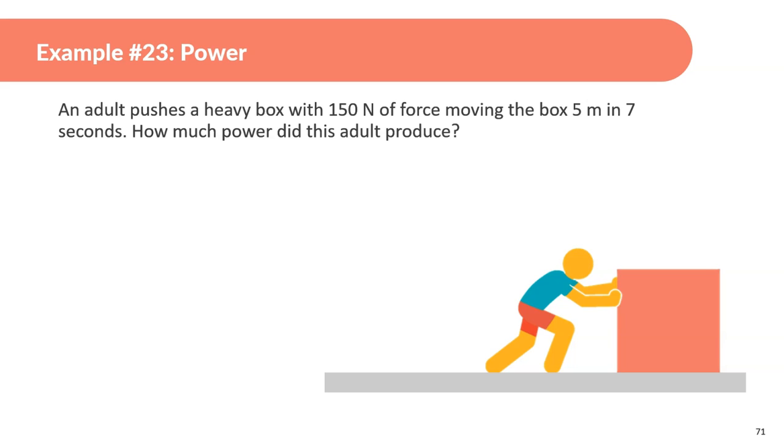An adult pushes a heavy box with 150 newtons of force moving the box 5 meters in 7 seconds. How much power did this adult produce? Power equals work divided by time, but we got to figure out what work is by this person. Work by the force applied is 150 newtons times the displacement which is 5. So, this is going to be equal to 150 times 5, 750 joules. Great. So, power is going to be work which is 750 divided by time which is 7 seconds, and that's going to be 107.14 watts.